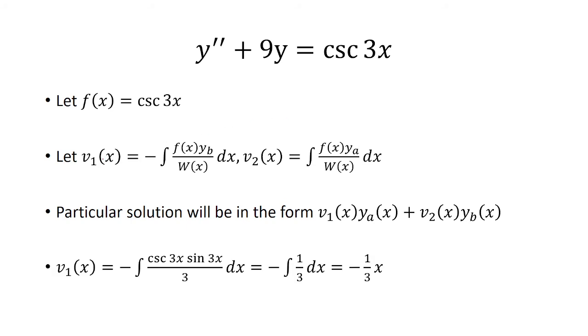So first finding v₁, f(x) is cosecant 3x. From the previous slide, we let y_b equal sine 3x.